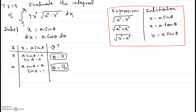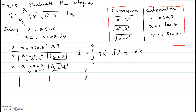So if I call the original integral I, then I = integral from 0 to a of 7x² times the square root of a² minus x² dx. I can take the 7 out of the integral as a constant, and now I am going to write everything in terms of θ, using the new limits 0 through π/2.